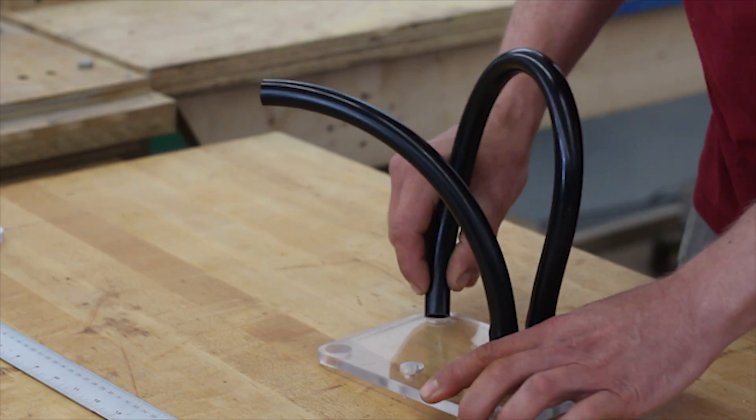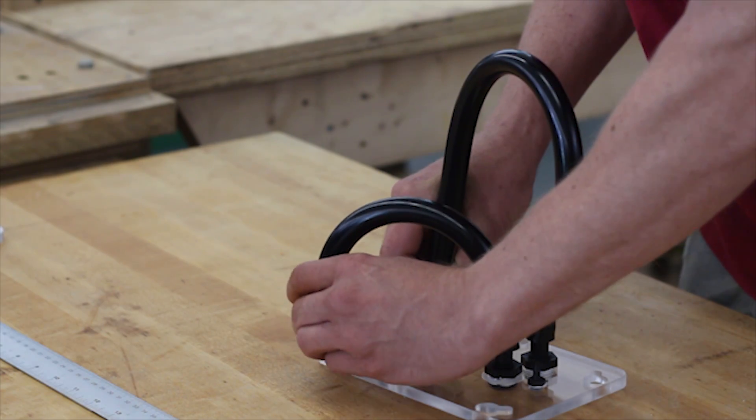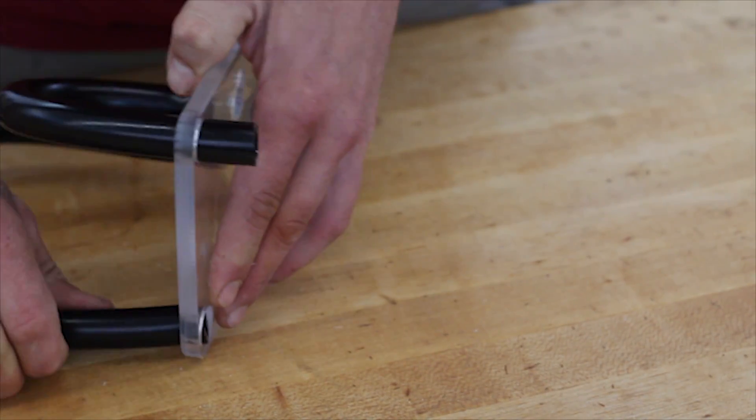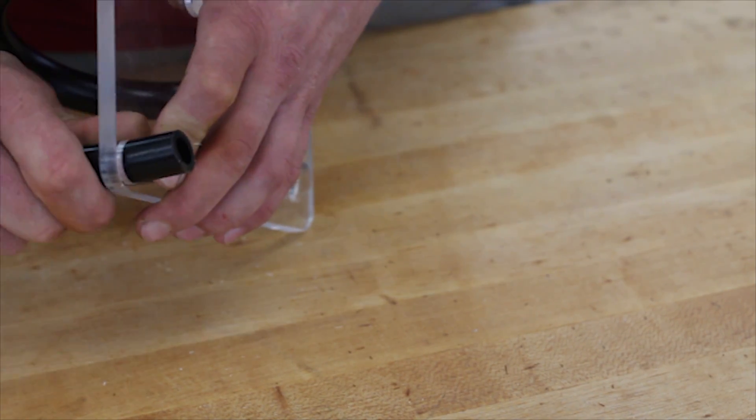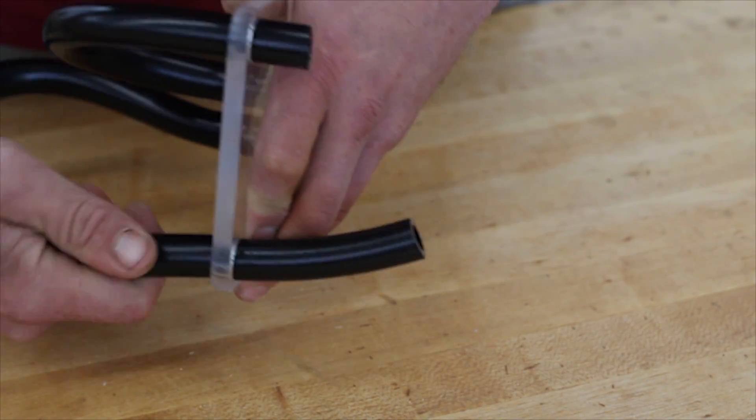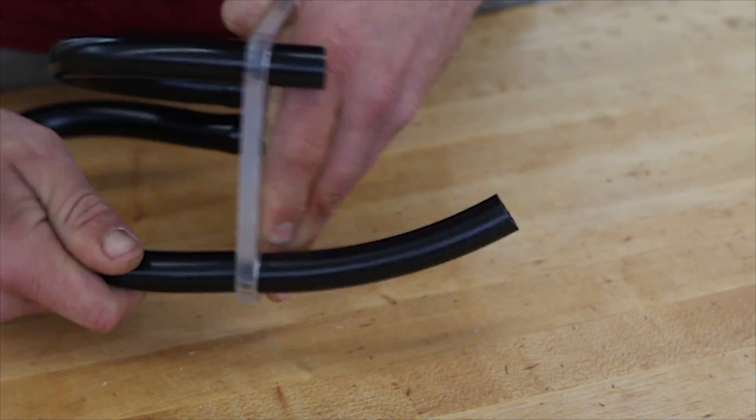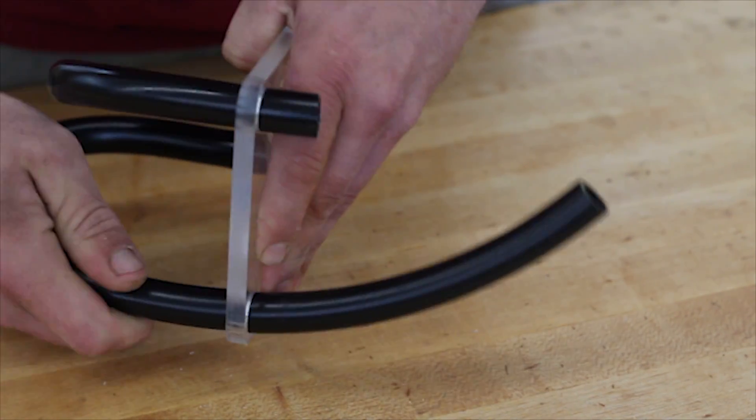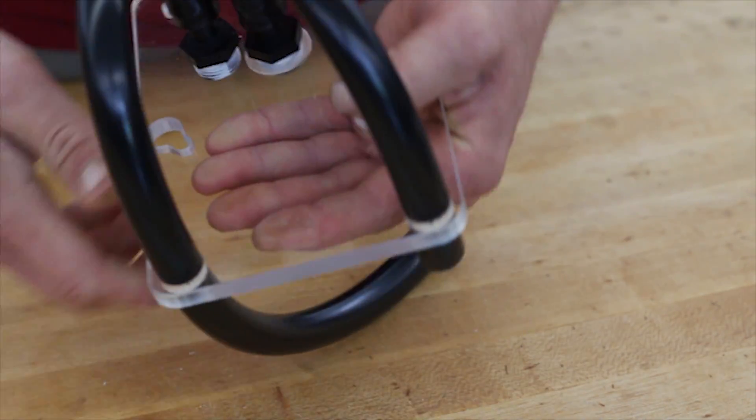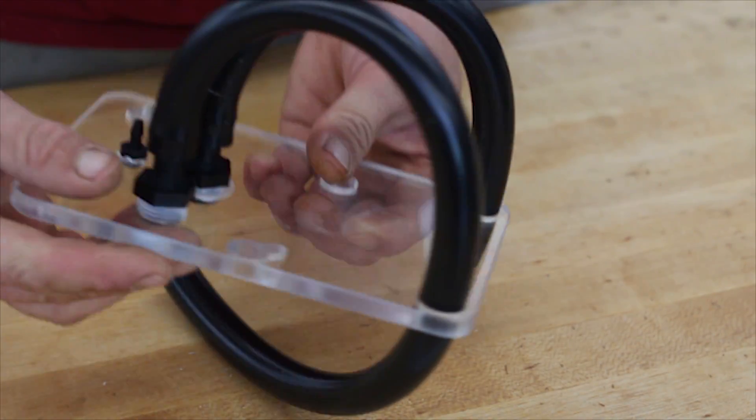The other ends of the tubing go through the support holes in the lid. You want to pull the tubing through, leaving a nice smooth arc above the lid with no kinks.